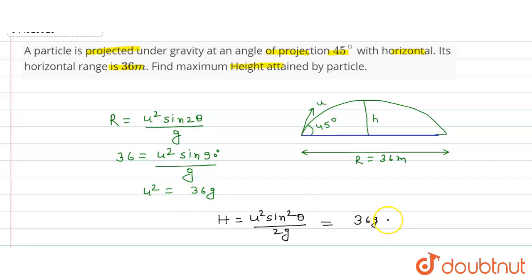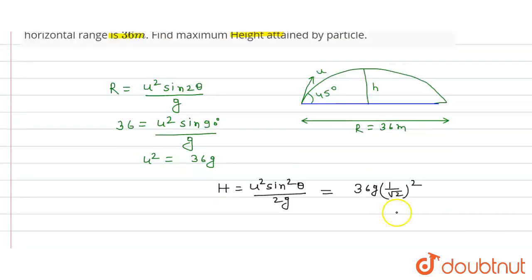And sin²θ means this will be 1 upon root 2 (sin 45 is 1 by root 2) upon 2 into g. So g and g cancel. From here this will be 36 into 1 upon 2 into 2.